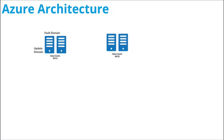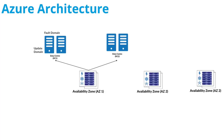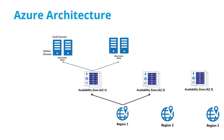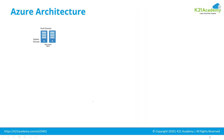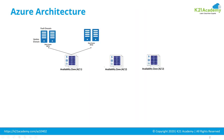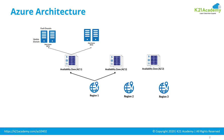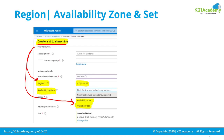This means the machines are within a single data center. Now, multiple data centers make up an availability zone, and within a region you can have up to three availability zones. When you select machines to be across availability zones, Microsoft places them in different availability zones, which means different data centers. One thing to understand is that not every Azure region has multiple availability zones. So if a region has only a single availability zone, you will not get the availability zone option.